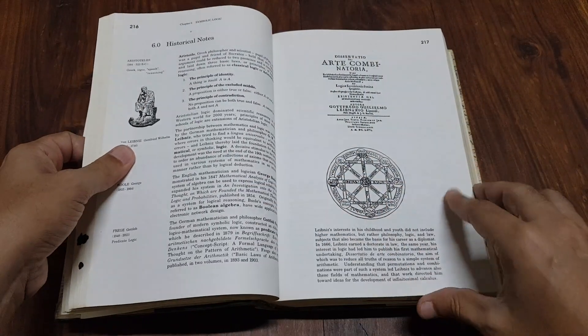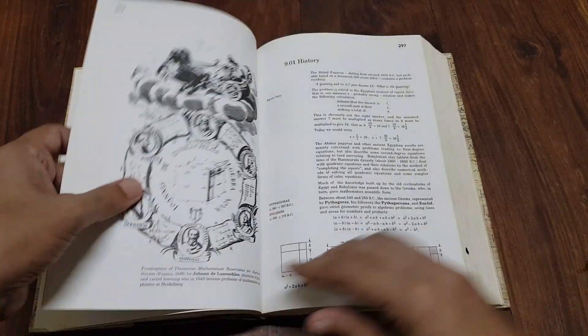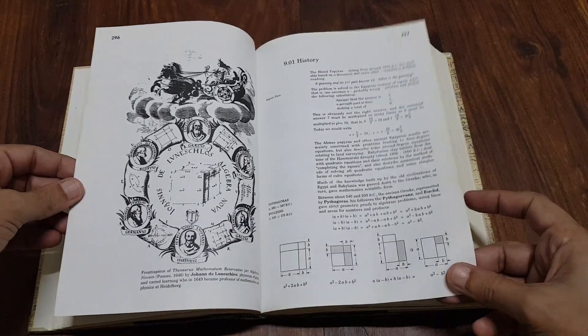Sidebars and asides provide additional information, anecdotes and insights into the lives of mathematicians, and the development of mathematical ideas.